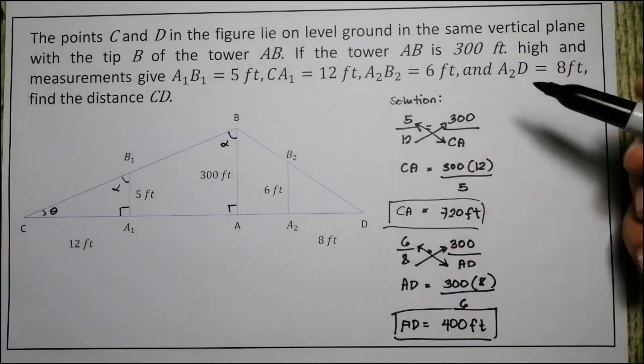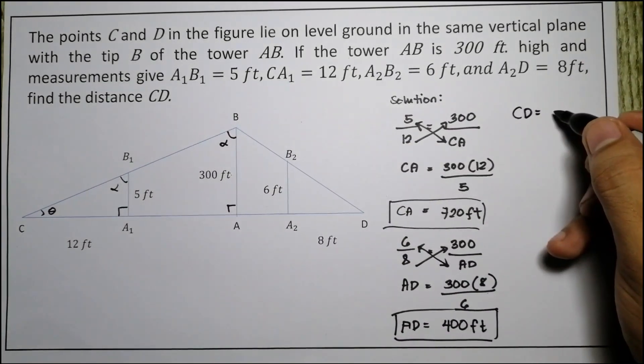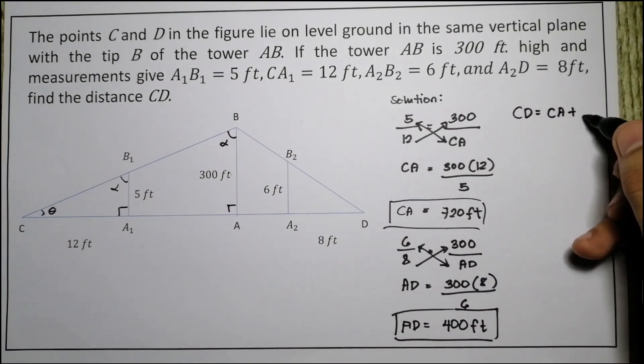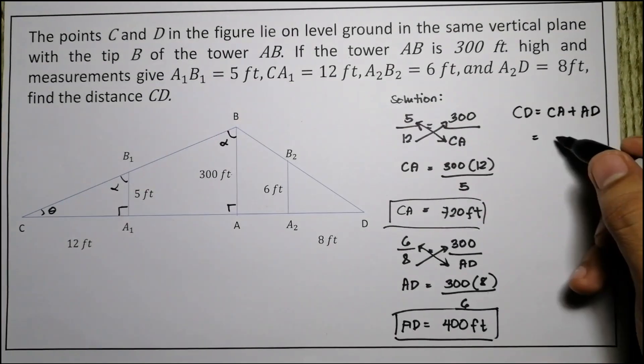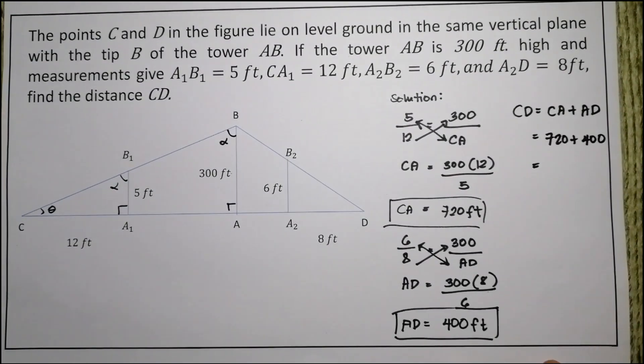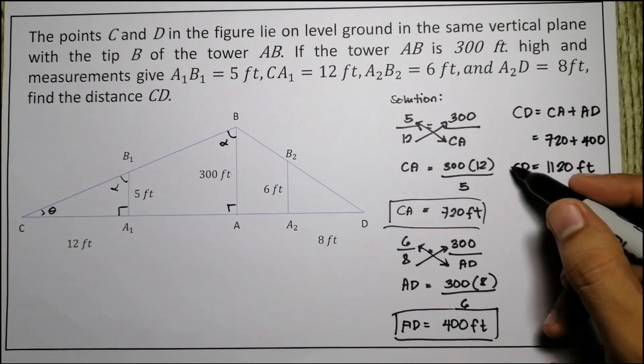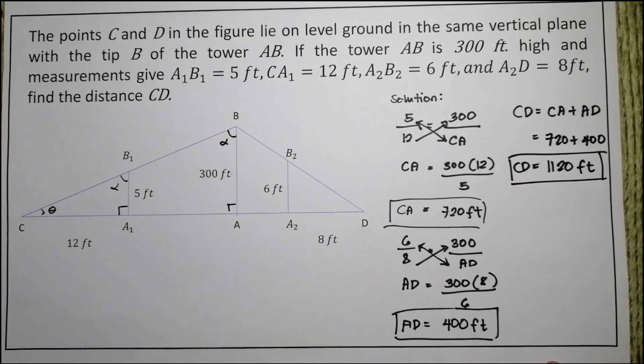Now, combining, since we're looking for the distance C to D, CD now is just equal to CA plus AD: 720 plus 400, which gives us 1,120 feet. And this is now our final answer.